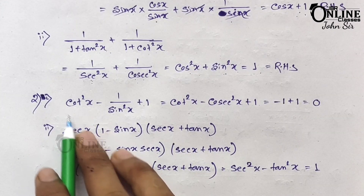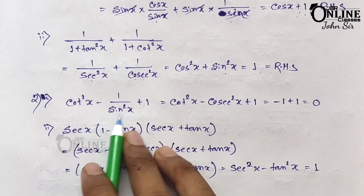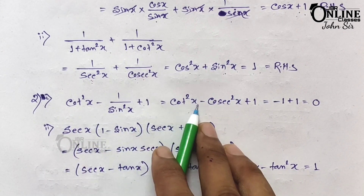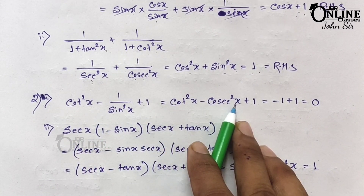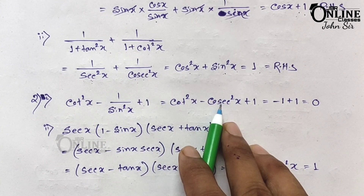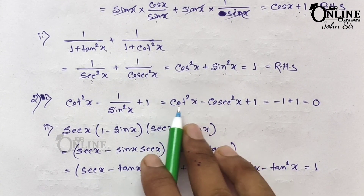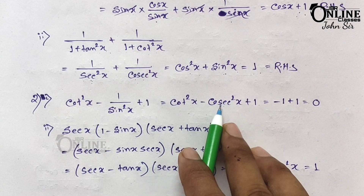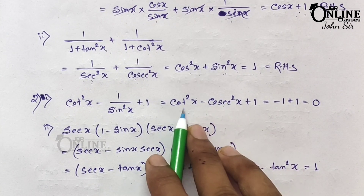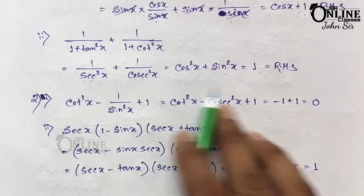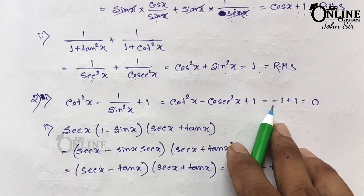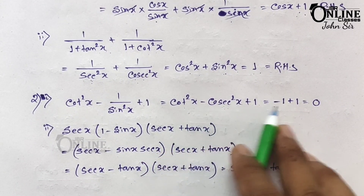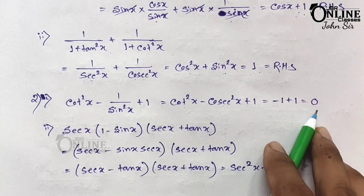Next: cot²x − 1/sin²x + 1 — you have to prove this equals 0. Here cot²x stays the same, and 1/sin²x means cosec²x. Now the formula is cosec²θ − cot²θ = 1, but here we have cot²x − cosec²x, which is the opposite, so that equals −1. Therefore −1 + 1 equals 0, proved.